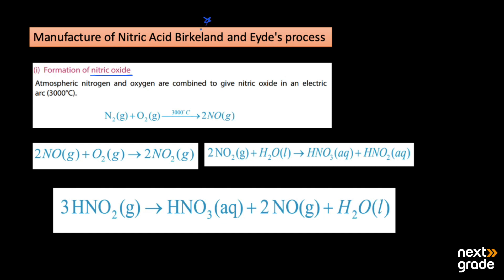Before starting this process, we need to form nitric oxide (NO). We use nitrogen present in the atmosphere combined with oxygen; they react in an electric arc or electric discharge at a temperature of 3000 degrees Celsius, which is a very high temperature. Nitrogen reacts with oxygen and produces nitrogen oxide (NO).